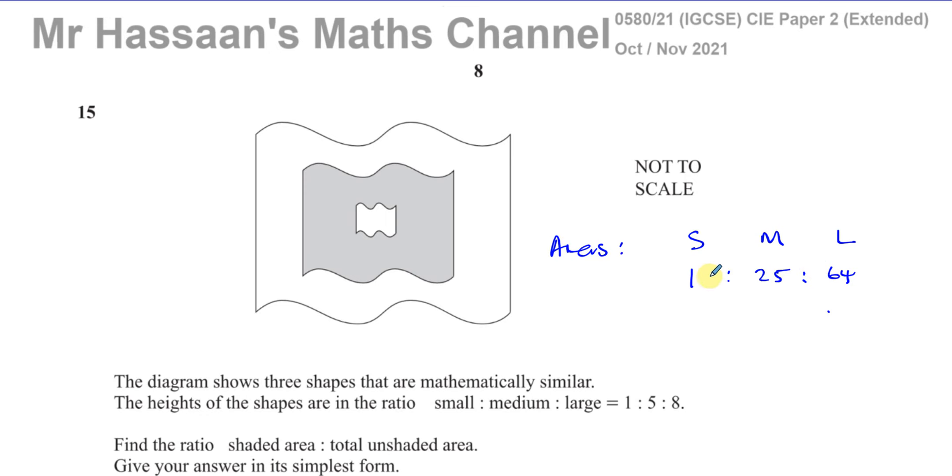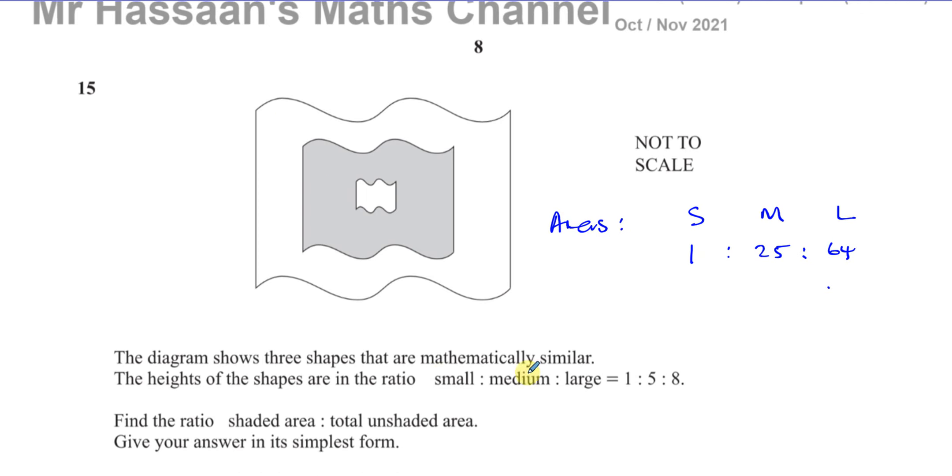The ratio of the areas is the square of the ratio of the lengths for similar shapes. And we're told here they're mathematically similar. So that's very important for us to realize.